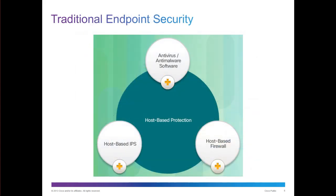Traditional Endpoint Security deals with cross sections between anti-virus, anti-malware, host-based IPS's, IDS's, and host-based firewalls — all of these combined provide host-based protection. Keep in mind, a lot of these also have a network-based portion: there's network antivirus, a network IPS, IDS, and network firewalls. We can have both network-based and host-based for layered protection or defense in depth.